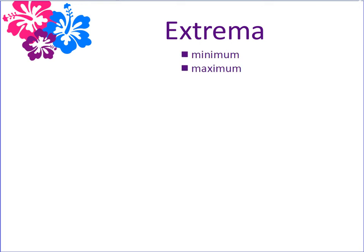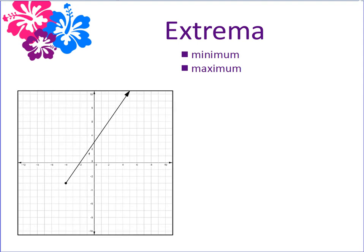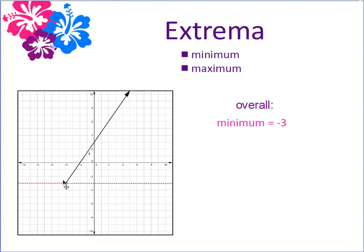Let's move on to extrema. You've used extreme values a lot in the past in terms of minimum and maximum — referring to on a graph the lowest y-value that the graph reaches and the highest y-value the graph will ever reach. Looking at this graph as a whole, I can see that the minimum value, or the lowest y-value this graph will reach, is negative 3. Since this ray is going to continue in an upward motion forever, we're going to have a maximum of positive infinity.